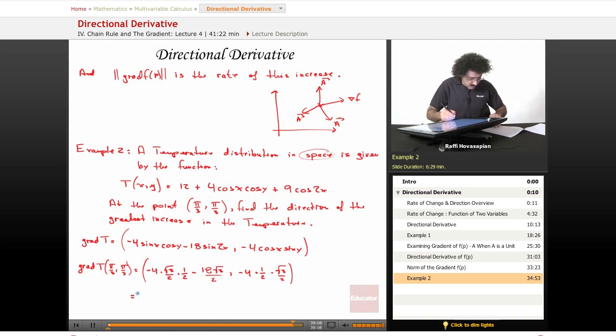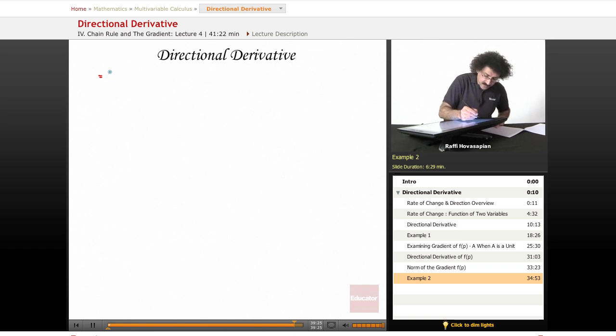That's going to equal negative root three minus nine root three, and then negative root three. And I'm actually going to go on to the next page here because everything's lines here. So our final answer is minus 10 root three minus root three. That's it. This vector. If I move in the direction of the vector minus 10 root three minus root three from pi over three pi over three at that point, that's the direction that's going to give me the maximal increase in the temperature, the gradient vector, the direction of the gradient vector.